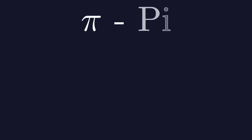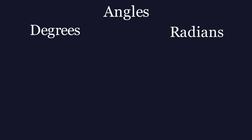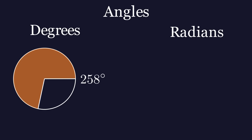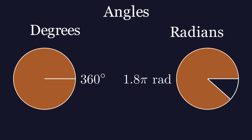Let's start with pi. Pi is a well-known constant in geometry, representing the ratio of a circle's circumference to its diameter. It is equal to around 3.14. Pi is also important in measuring angles. There are two main ways to measure angles: degrees and radians. In degrees, a full circle is 360 degrees, but in radians, a full circle is measured as 2 pi radians.